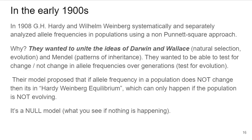This is where we segue into a little history. In the early 1900s, Hardy and Weinberg were working separately but on the same ideas. They were both really interested in analyzing allele frequencies in populations using something that was not a Punnett Square approach, but that did rely on Mendelian genetics. At that time, people were really interested in the work of Mendel, which had been recently rediscovered. They were also really interested in the ideas of Darwin and Wallace, who proposed evolution through the mechanism of natural selection. Hardy and Weinberg wanted to take those ideas and unite them with the ideas of Mendel, uniting patterns of inheritance with evolution.